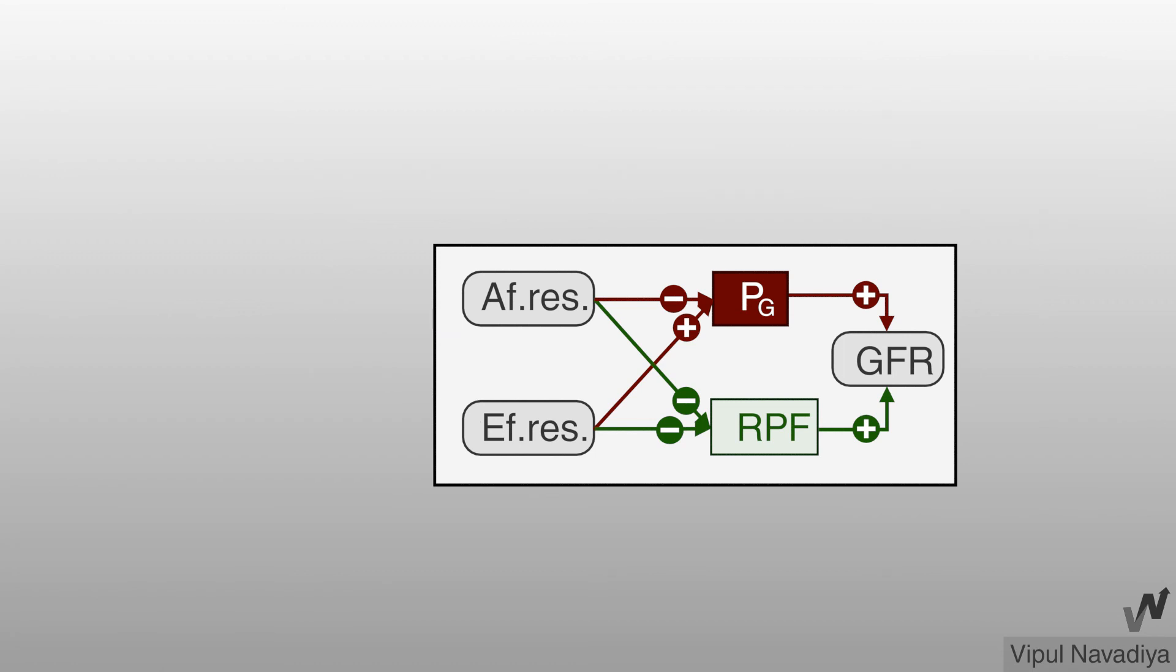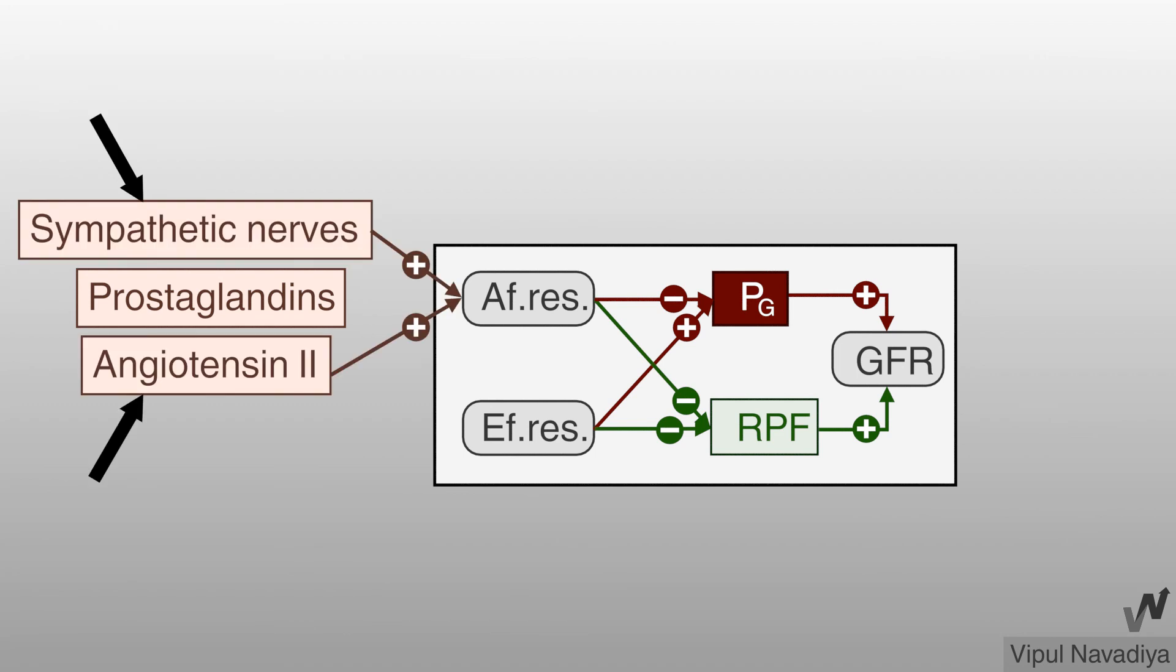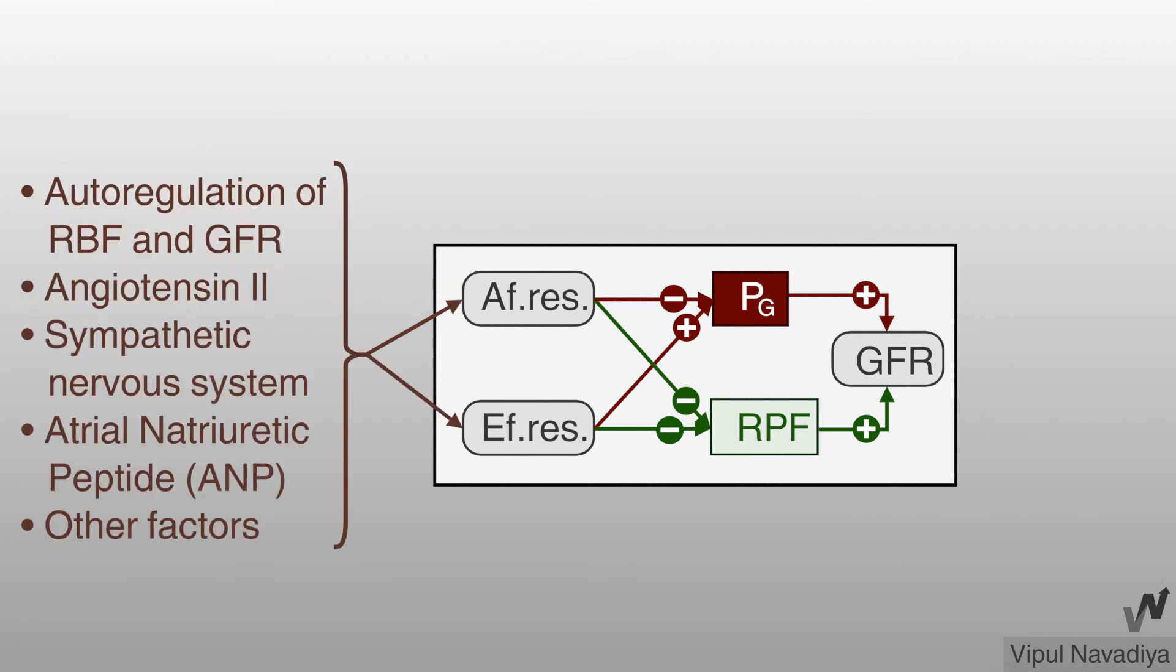Also there are some other factors which play a minor role in regulation of GFR. Like dopamine causes renal vasodilation and increases GFR. Prostaglandins do not play important role under normal condition. However, they become important when there is excessive constriction of renal vessels by sympathetic stimulation and angiotensin two. Prostaglandins prevent excessive constriction of afferent arterioles and thereby prevent excessive reduction in GFR. So these were the factors regulating renal blood flow and GFR.